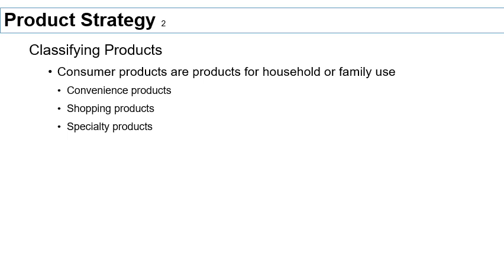Finally, you have specialty products. These are products where the consumer is particularly interested in certain specific attributes of the product, and because of that, they are going to go out of their way in terms of effort and distance to locate and acquire this product. The consumer is going to be less willing to trade off between different features or aspects, and it is going to be a less automatic decision — these are products the customer is searching specifically for.